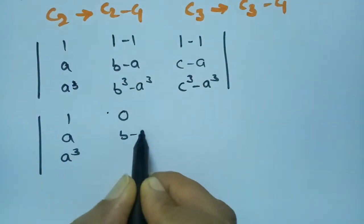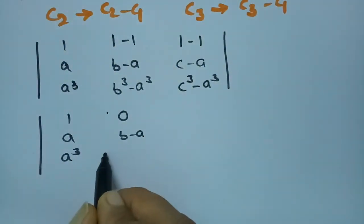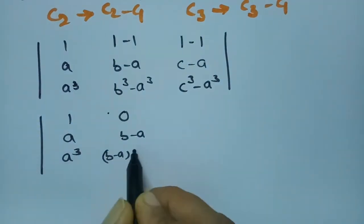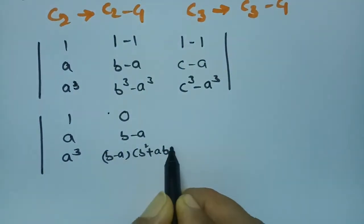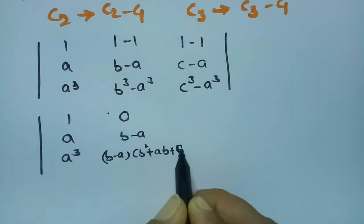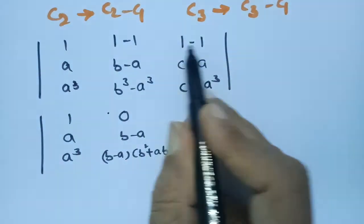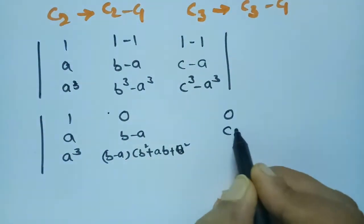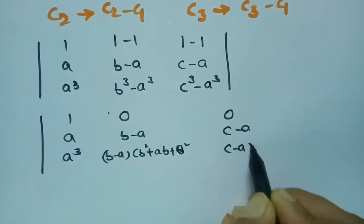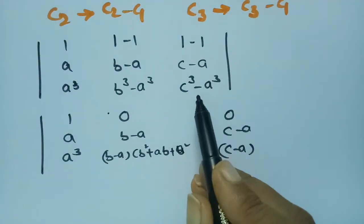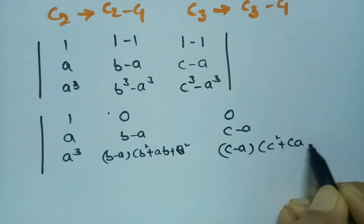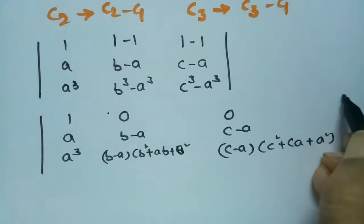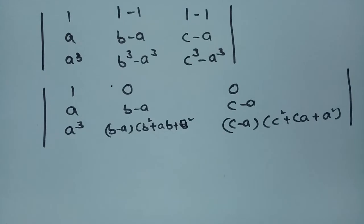Now, b³−a³ can be factored as (b−a)(b²+ab+a²), and c³−a³ can be factored as (c−a)(c²+ca+a²). So the determinant becomes: 1, a, a³ / 0, (b−a), (b−a)(b²+ab+a²) / 0, (c−a), (c−a)(c²+ca+a²).